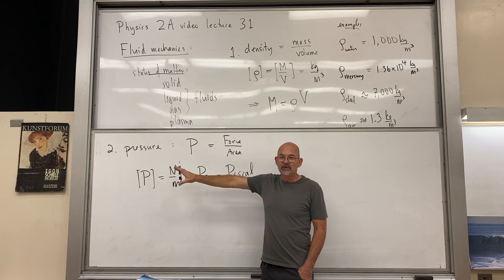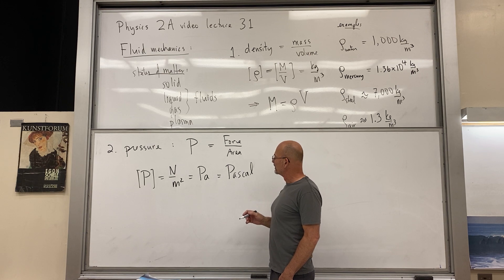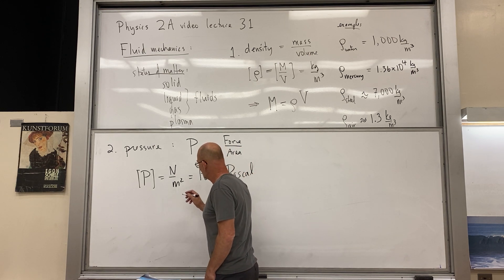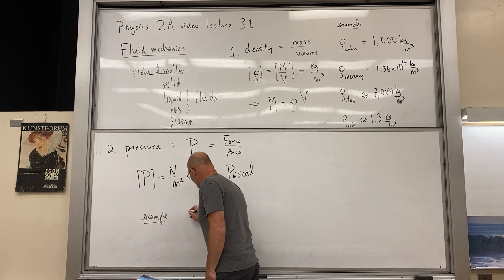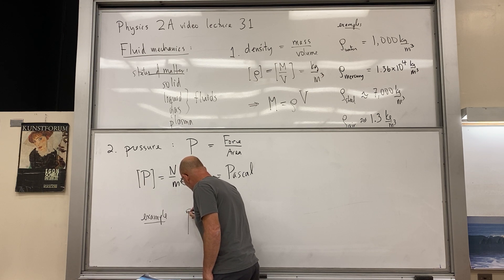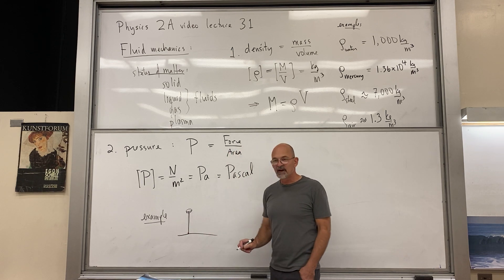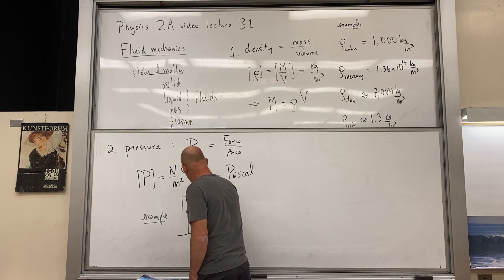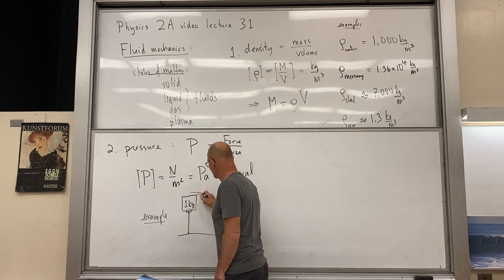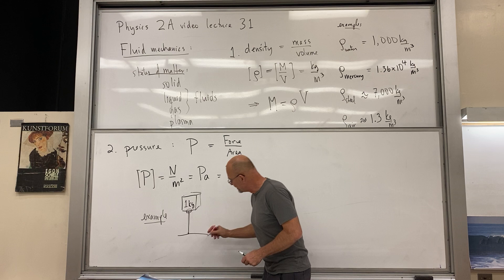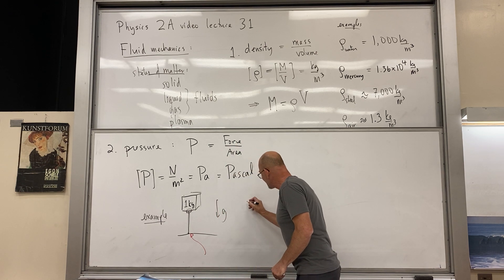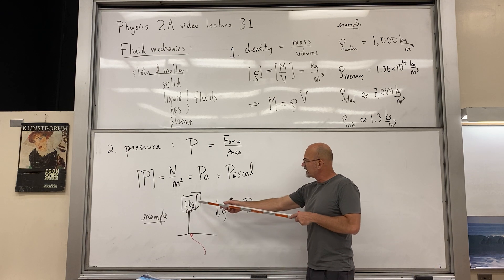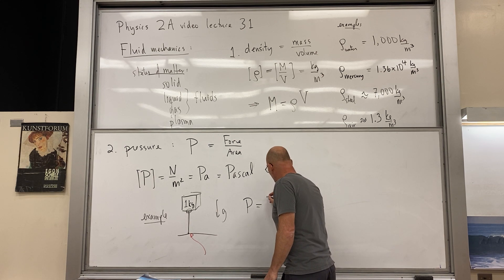Pressure allows us to produce enormous pressures without that much force. For example, consider a sharp nail with 1 kilogram on it under gravity. The pressure at the tip is P = mg/A. With g ≈ 10 m/s² and a tip radius of one-tenth of a millimeter (10⁻⁴ m), the area is 10⁻⁸ m², giving a pressure of about 10⁹ pascals.